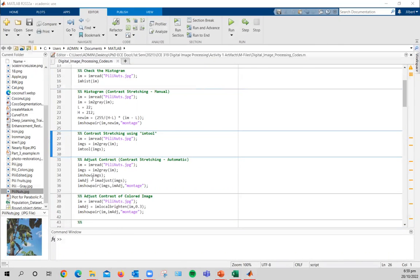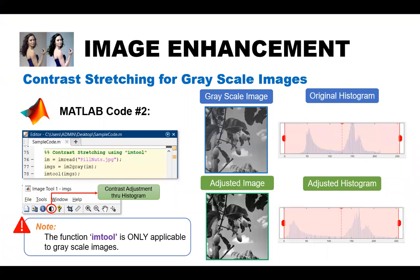So going back to the presentation, this type or the previous contrast stretching is the manual way. Now we move on to at least an automated one. And this type of contrast stretching method is also used for grayscale images and a bit similar to the first contrast stretching method. But the difference is that we will be selecting the lower and higher pixel values from the histogram using a graphic user interface or a GUI. The method uses the code iamtool.